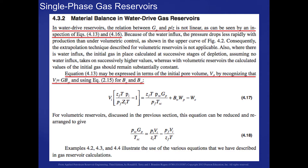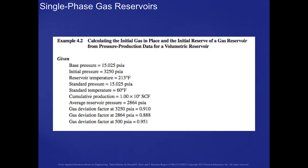For volumetric reservoirs, this same equation reduces to equation 4.18. Now let's take a look at some example problems that will give meaning to these equations. This first example is example 4.2 in the text: calculating the initial gas in place and the initial reserve of a gas reservoir from the pressure production data for a volumetric reservoir.